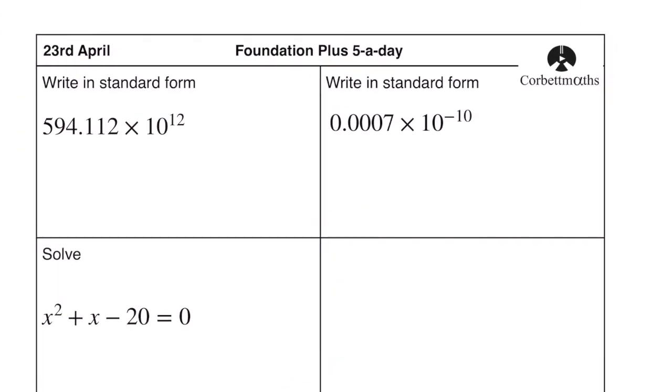Write this in standard form. Now normal standard form the front number has to be between 1 and 10 ultimately. So 5.94112. Now if we've decreased this by a factor of 100 we need to increase this by a factor of 100 so it's going to be 10 to the 14. Same for this. This will just have to be 7 times 10. Now this one has become 1, 2, 3, 4 times as big which is ultimately 10,000. So this has to become 10 to the 4 times smaller. So minus 14.